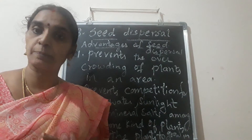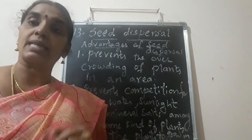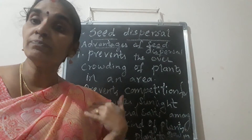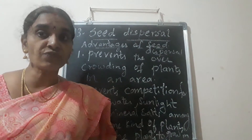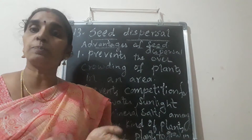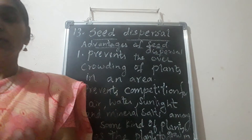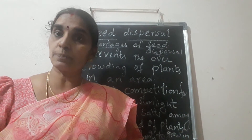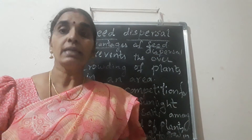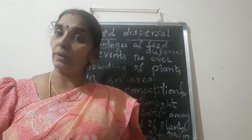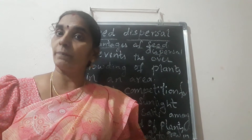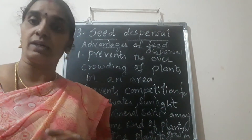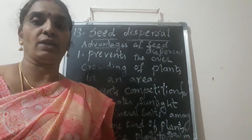To recap: seed dispersal is the scattering of seeds from one place to another over a large area, away from the parent or mother plant, through the agents of dispersal - which are wind, water, insects, birds, animals, human beings, and the bursting mechanism. Now we will see this explanation about the agents of seed dispersal one by one.